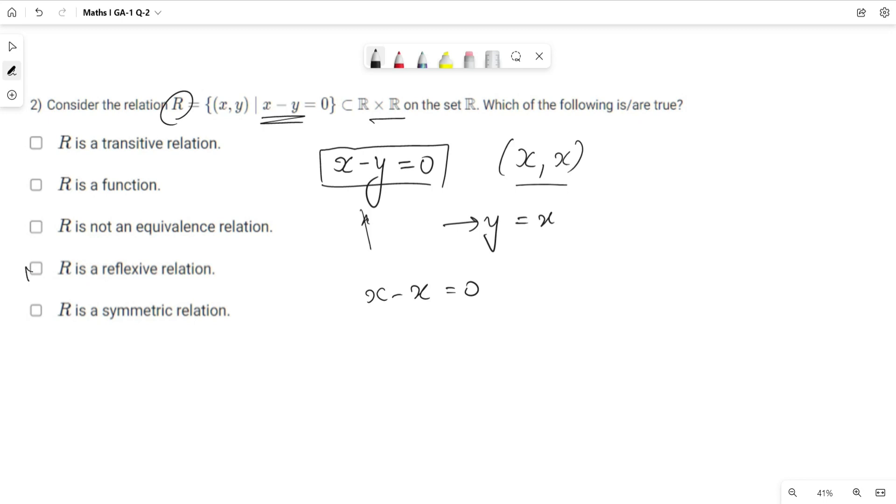So (x, x) satisfies this relation, hence R is a reflexive relation. Now for symmetric: if (x, y) satisfies, then (y, x) should also satisfy. Given that x - y = 0, which means x = y. Now, y - x: from this equation we got x = y, that's why y - x is also 0. Hence both (x, y) and (y, x) satisfy the relation, so R is also symmetric.